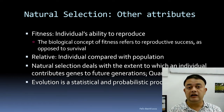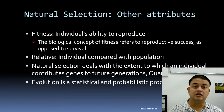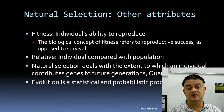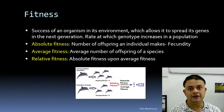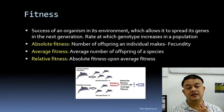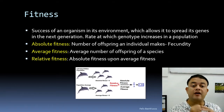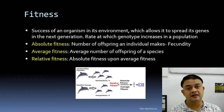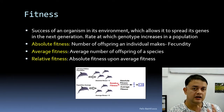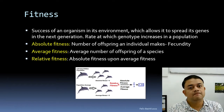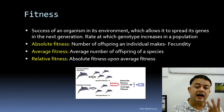Models such as Kimura two-parameter or Tamura-Nei are used to model probabilistic evolutionary datasets. Fitness is the success of an organism in its environment, allowing it to spread its genes to the next generation. The rate at which a genotype increases in the population is called fitness — high fitness means a large number of genes are transmitted to the next generation.